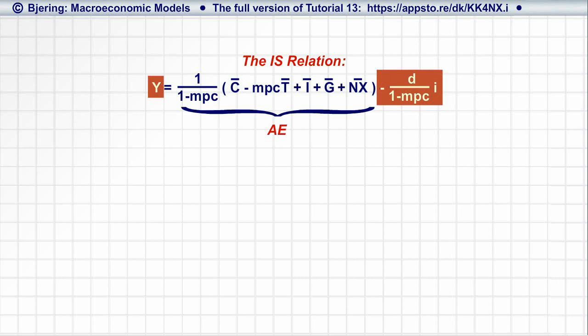The channel through which the interest rate affects aggregate expenditure and equilibrium output and income is the monetary transmission mechanism.